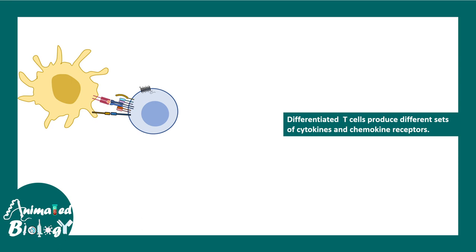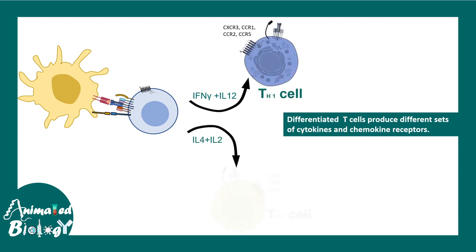Different subtypes of T cells have different kinds of chemokine receptors, so chemokine receptors also work like a signature to identify different cell types. For example, after interaction with the dendritic cell in the lymph node, the T cell would ultimately become a Th1 or Th2 subpopulation based on the polarizing cytokine or interleukin it interacts with. The Th1 subtype has CXCR3, CXCR1, CXCR2, and CXCR5, whereas the Th2 subtype has CCR3, CCR4, and CCR2.